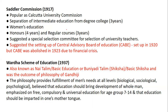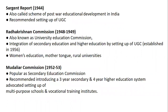The Wardha Scheme of Education is also known as Nai Talim, basic education, bunyadi education, or basic shiksha. It fulfills needs of all levels and promotes holistic development, making education compulsory for ages 7 to 14 and recommending education be imparted in the mother tongue. Questions have appeared on this. The Sargent Report focused on post-war educational development in India and recommended UGC. The Radhakrishnan Commission is also known as the University Education Commission, integrating secondary and higher education, women's education, mother tongue, and rural universities.